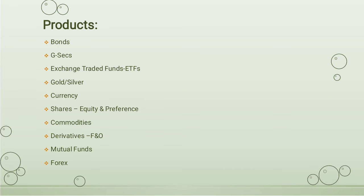The next important product available is commodities. Commodities, like currencies, is a short-term investment product. In commodities you will have products like jeera, gold, silver, crude oil — very volatile products. All these are volatile items in the commodities section.